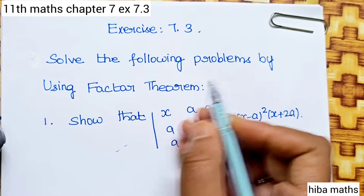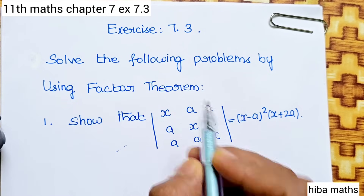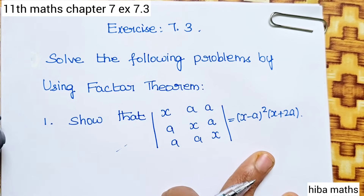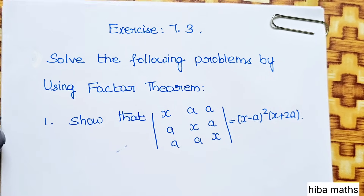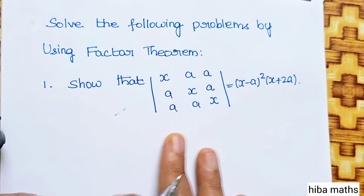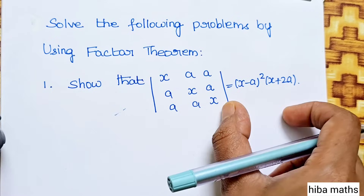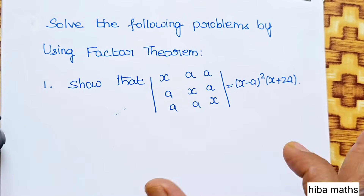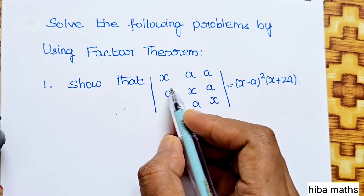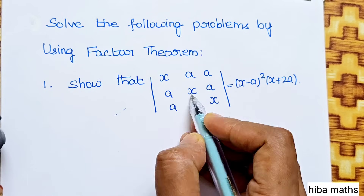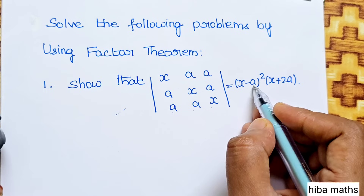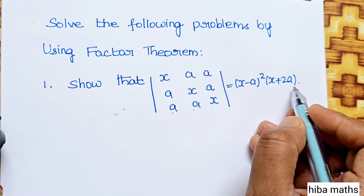Solve the following problems by using factor theory. Using determinants, we can solve all the proofs. We need to show that the determinant with rows (x, a, a), (a, x, a), (a, a, x) is equal to (x minus a) whole square into (x plus 2a).